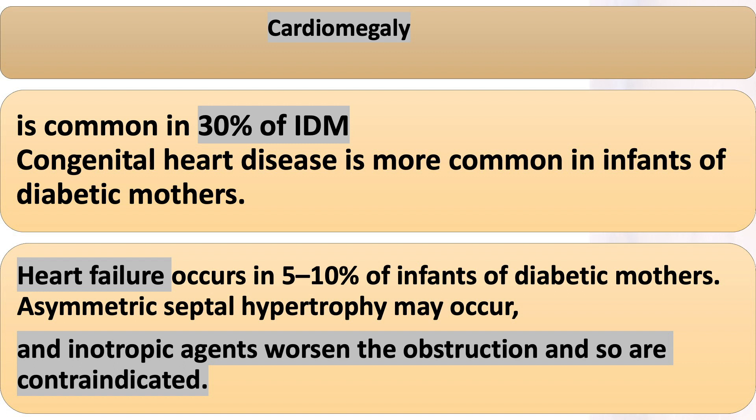Cardiomegaly is common, occurring in 30% of IDM. Congenital heart disease is more common in infants of diabetic mothers, and heart failure occurs in 5–10%. Asymmetric septal hypertrophy may occur, and inotropic agents worsen the obstruction and are therefore contraindicated.